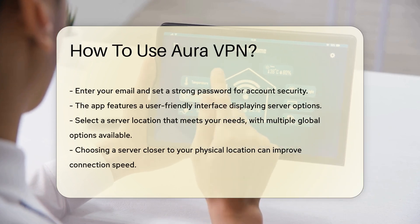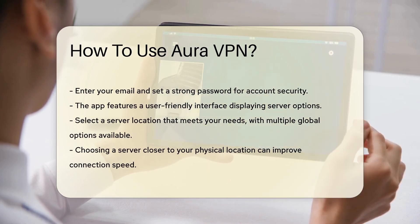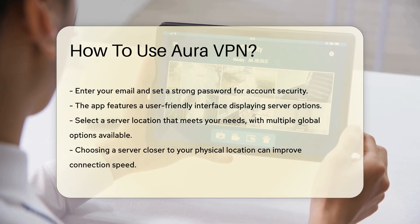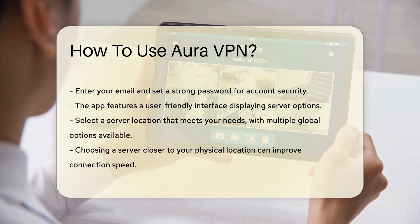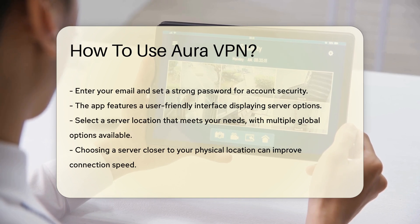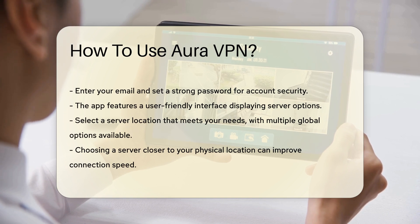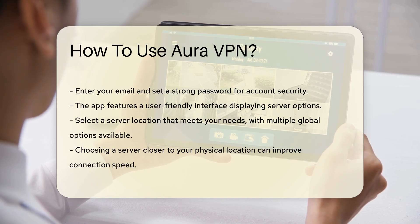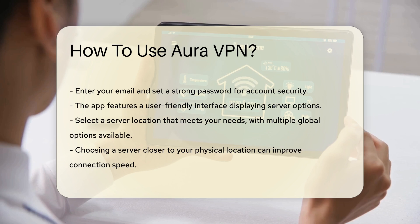Once logged in, you will see a user-friendly interface displaying server options. Select a server location that suits your needs. Aura VPN provides multiple server locations worldwide, and choosing a server closer to your physical location can improve connection speed.